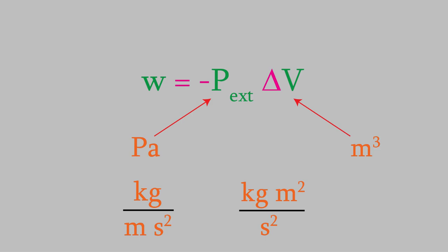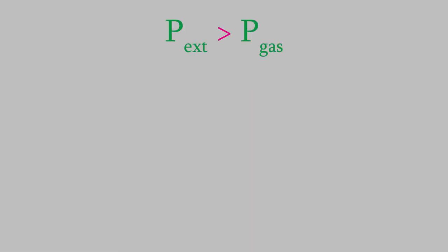As we saw a moment ago, when P_external is greater than P_gas, the system's volume is compressed. As you'd probably guess, when P_external is less than P_gas, the volume of the system expands. And the volume doesn't change when the two pressures are equal.